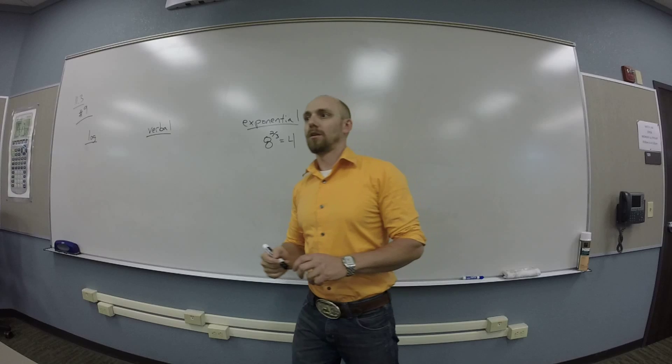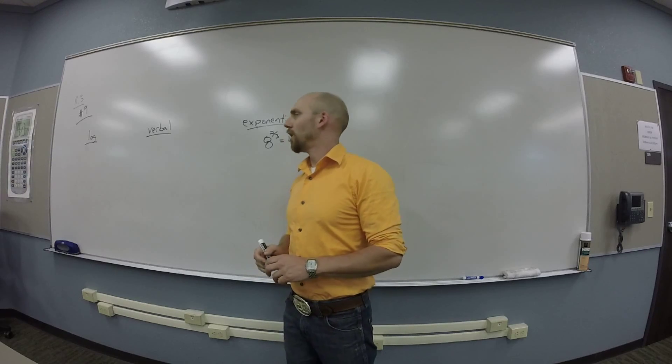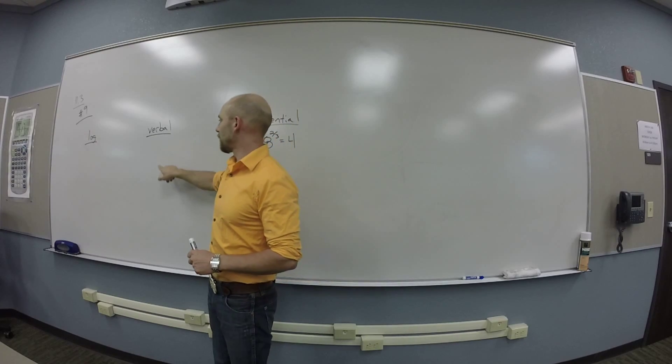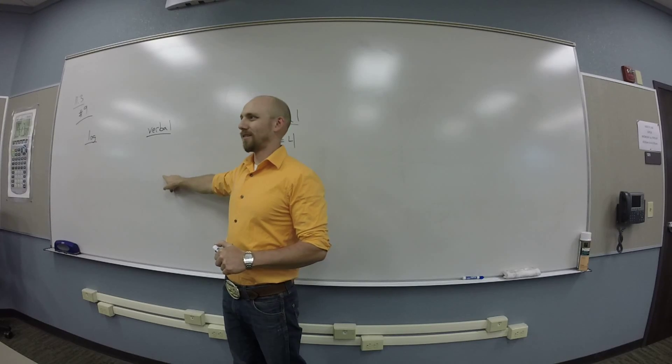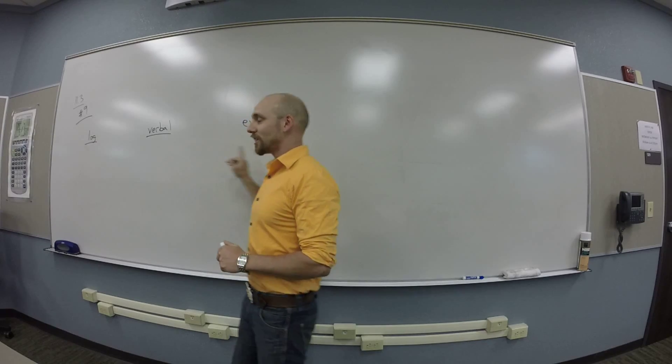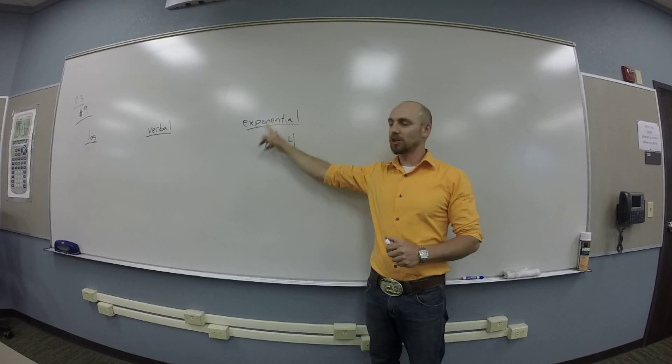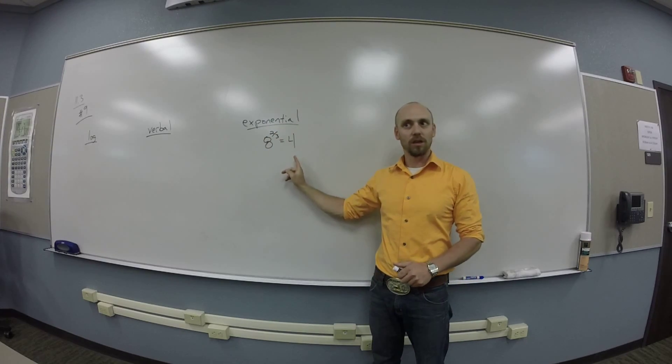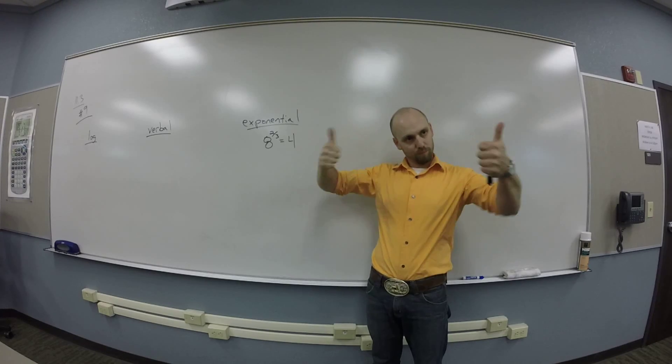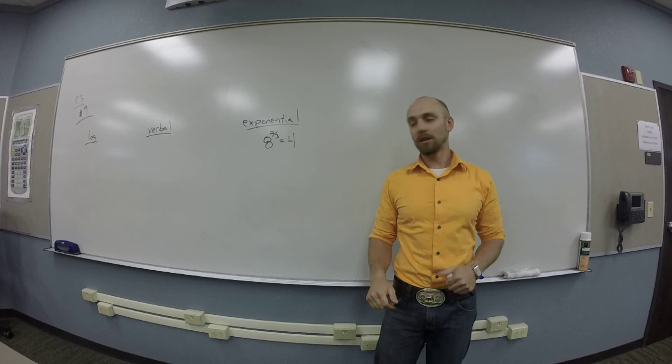Log base 8 of 4 is 2 thirds. Wait, am I supposed to be saying the log thing or the exponential thing? The log. Oh, okay. So I can tell you what this says exponentially. Okay, so how would you read this exponentially? Like as it's written, what would you say? 8 to the 2 thirds power is 4. Perfect. Awesome. 8 to the 2 thirds is 4.